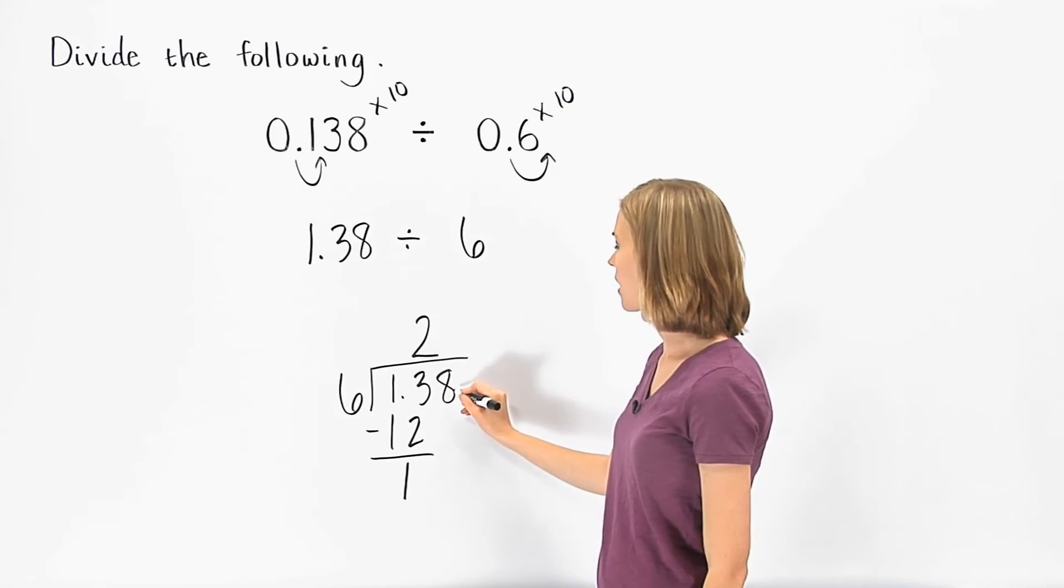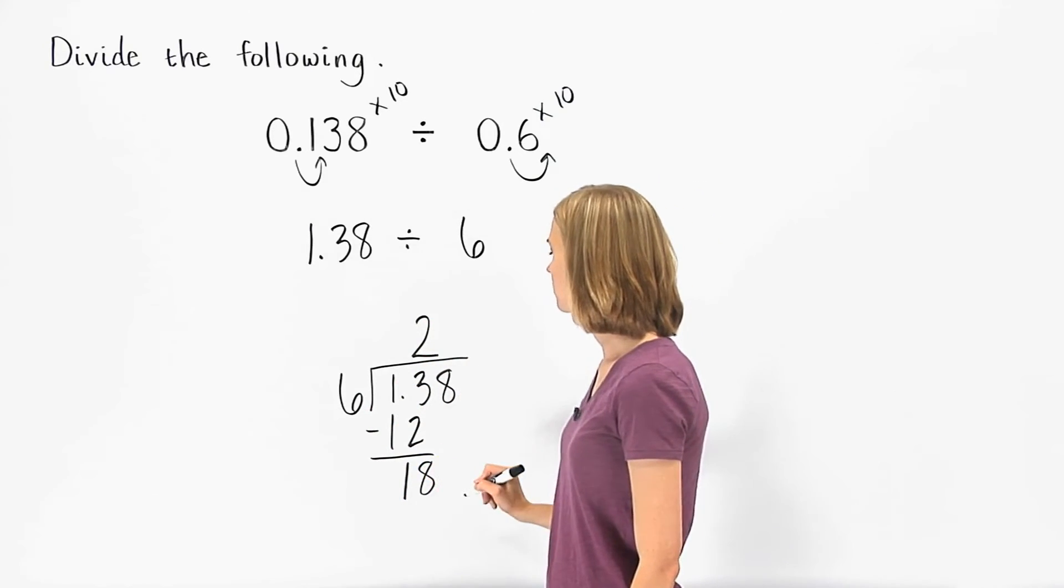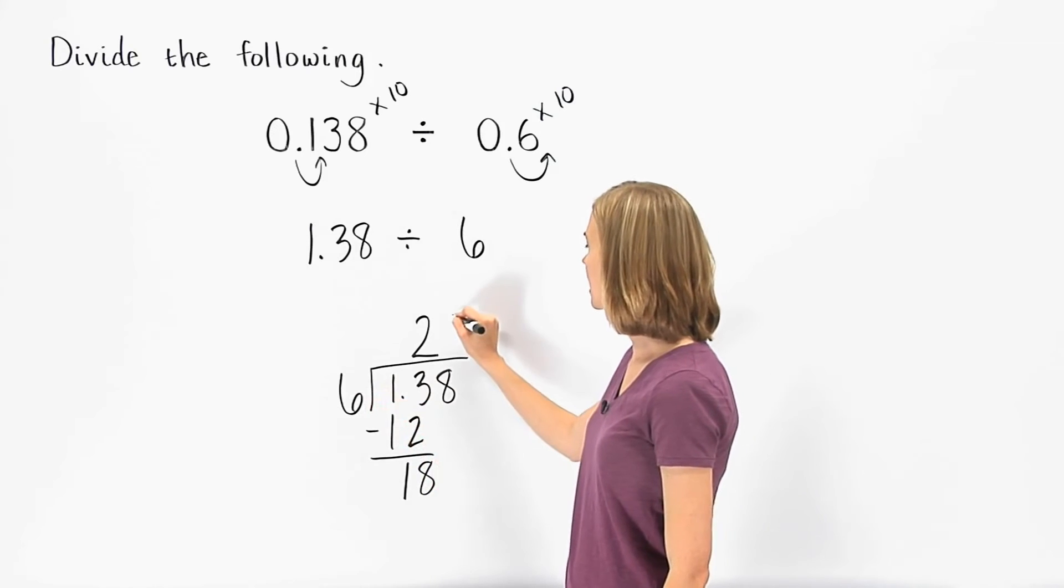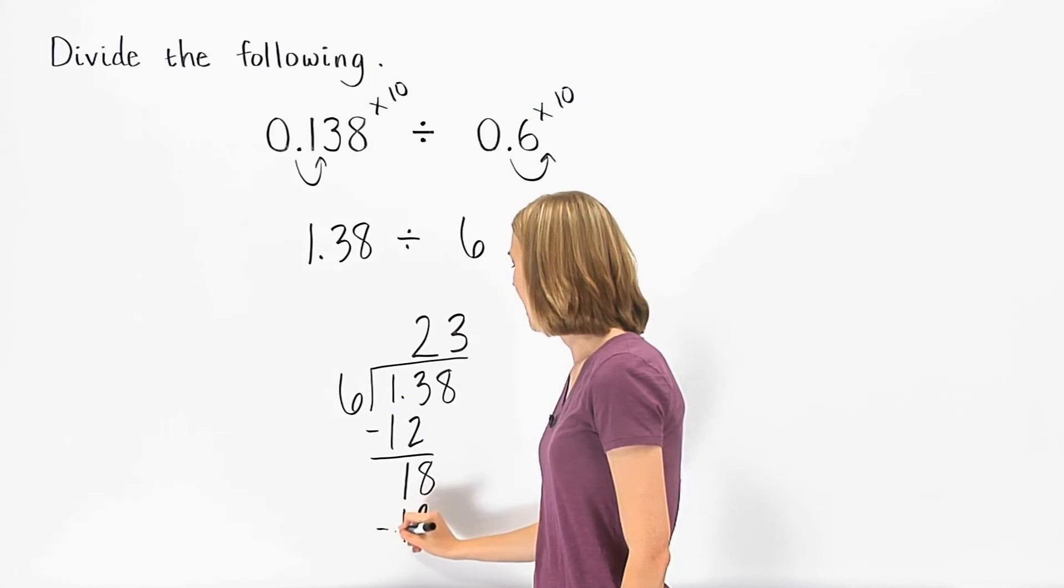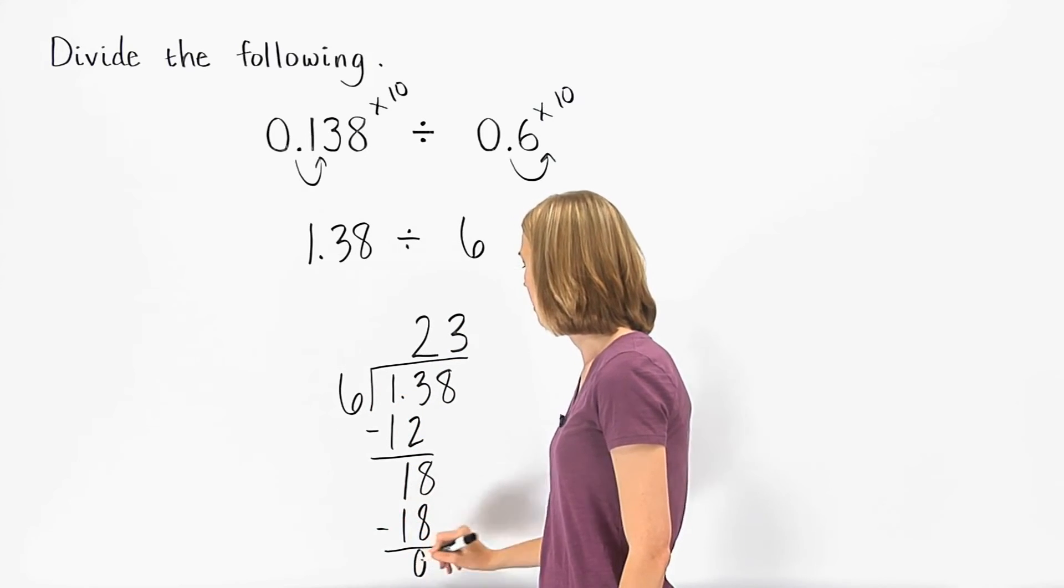Now we bring down the 8 to get 18. 6 divides into 18 three times. 3 times 6 is 18, and 18 minus 18 is 0.